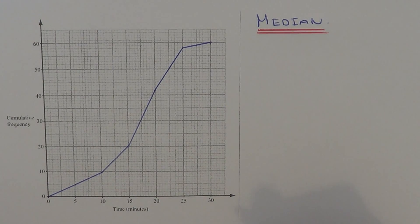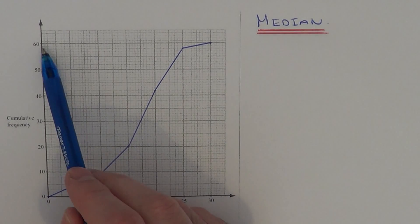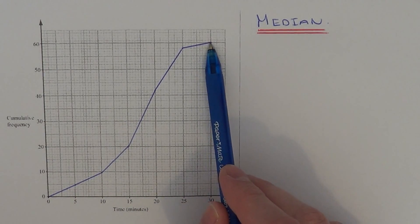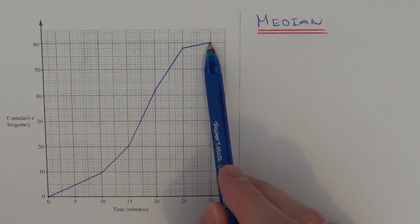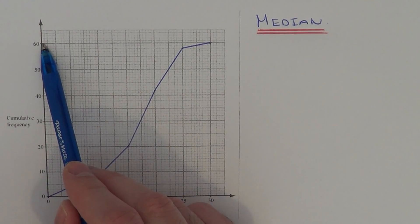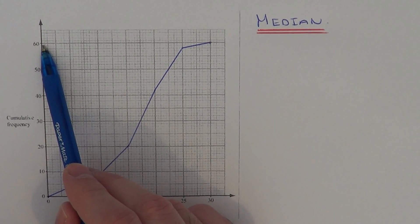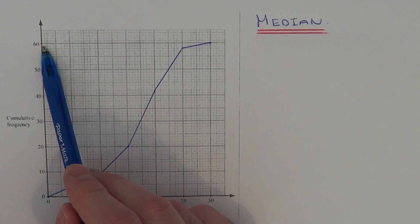First thing you need to do is look at how many people took part in the race. You'll get this by looking at the top of the graph. The top of the graph is at 60, so this means 60 runners took part in this race.